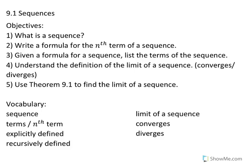Section 9.1: Sequences. Our objectives are: one, what is a sequence? Two, write a formula for the nth term of a sequence. Three, given a formula for a sequence, list the terms of the sequence. Four, understand the definition of the limit of a sequence — what does it mean for a sequence to converge or diverge? And five, use Theorem 9.1 to find the limit of a sequence.